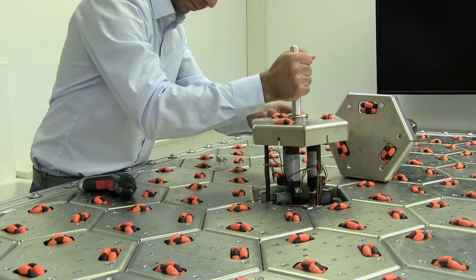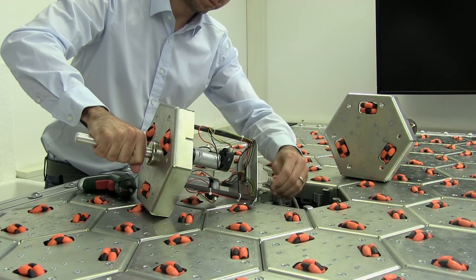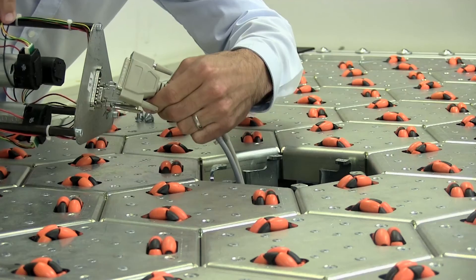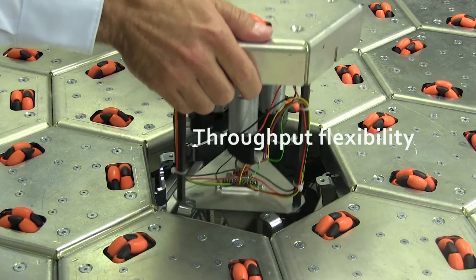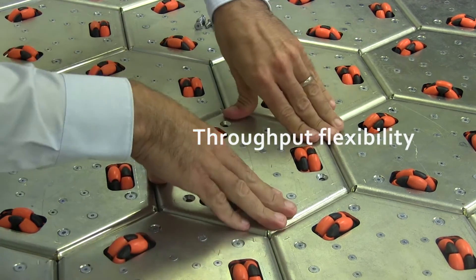The modular design also offers the advantage of simple adjustments to variations of the conveyor capacities. Up to now, a conveying system that encounters its limits is replaced or extended. The Celluvayer, in contrast, can be adjusted efficiently to the new throughput by adding or removing modules.